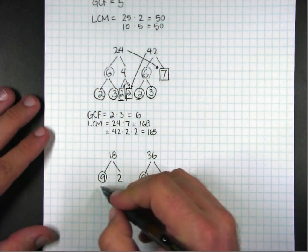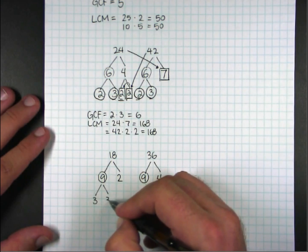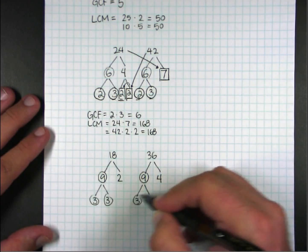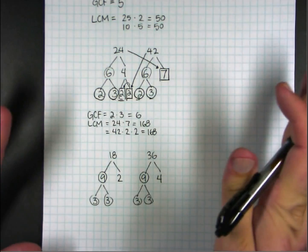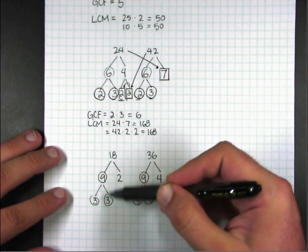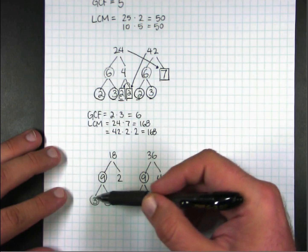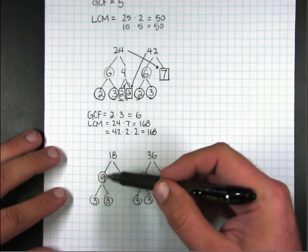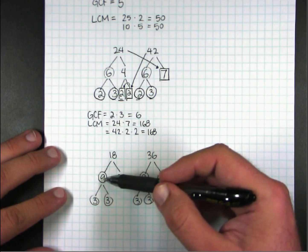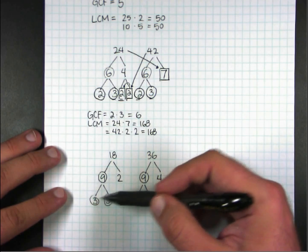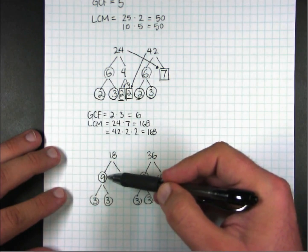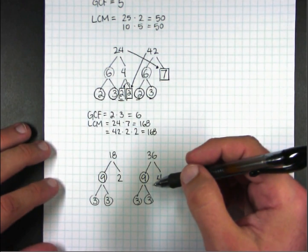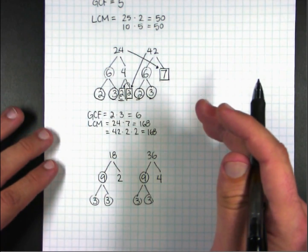Or if you prefer to go down to the primes, 9 is 3 times 3. 9 is 3 times 3. So you'll see they're shared. Whichever you prefer. Just make sure you stay consistent. If you go to primes, stay on a prime. If you stop here, stay stopped here. Your greatest common factor is not going to be 9 times 3 times 3. It's 9, which is also 3 times 3. That's why I suggest you pick one way and stick with it.